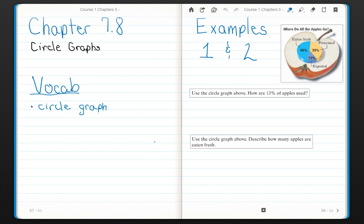Chapter 7.8: Circle Graphs. Today we're going to learn about a circle graph, which is basically just graphing data using a circle to show how much of something goes to different places, versus using a bar graph or line graph or something like that.